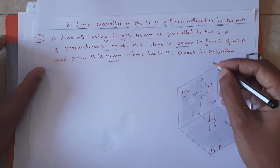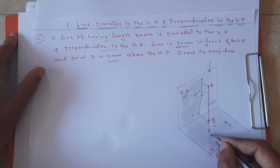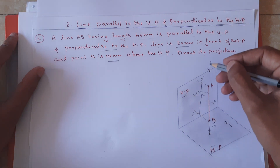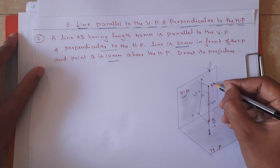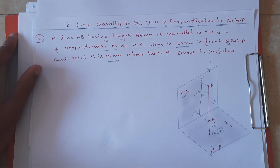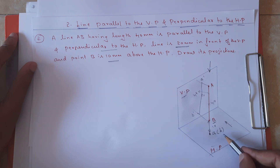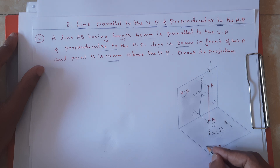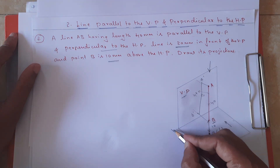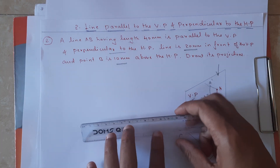For the top view, the observer looks from the top side. When we draw the projection, a and b fall on the same line, so the top view on the horizontal plane appears just as a point — because a and b are collinear. The observer can see a but cannot see b, so we represent it as a(b), with b in brackets because it is not visible to the observer. We rotate the horizontal plane 90 degrees clockwise to get the front view above the XY line and the top view below it.